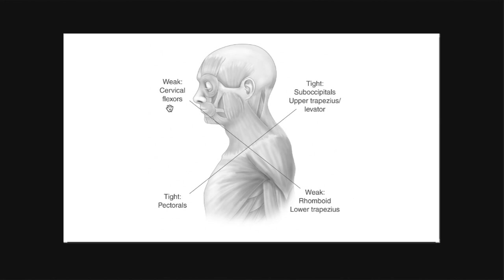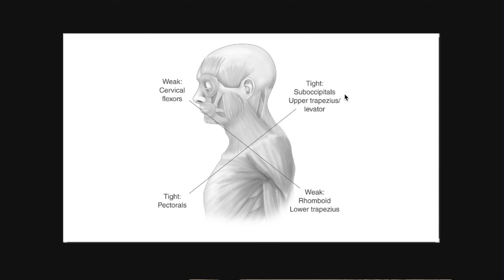We mentioned upper cross syndrome in the rhomboids video — levator scapulae is also commonly involved in upper cross syndrome, but in the opposite way. With the levator, we see more of that overworked tightness and tension presentation, generally paired with the upper traps, which also hold a lot of tightness and stress. This tightness pattern, coupled with weak overstretched rhomboids, weak overstretched lower traps, tight pecs on the front, and weak deep cervical flexors, gives us that upper cross syndrome presentation.